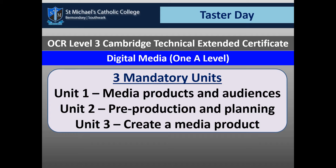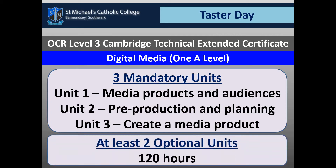To complete your course, which would be 360 hours of guided learning, there are also two optional units of 120 hours. A typical unit like Unit 3 is 60 hours, and Units 1 and 2 are exams, typically 90 hours each. That gives you another 120 hours, typically two or three units depending on the size of each one.